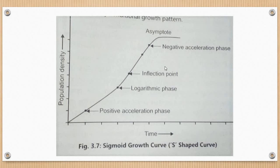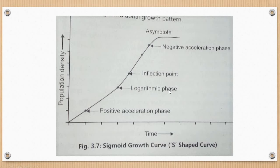Once individuals are acclimatized and adapted to that particular environment, the growth of the population increases rapidly. This is called the logarithmic phase or rapid growth phase. This rapid growth continues up to a certain point called the inflection point. After acclimatization comes positive acceleration, then after acclimatization the reproduction rate is very fast — that is the logarithmic or growth phase.